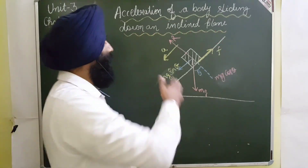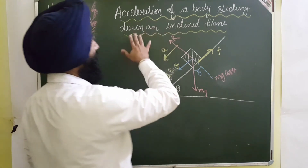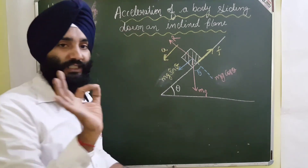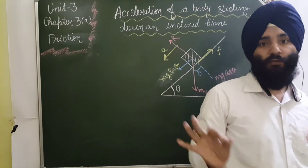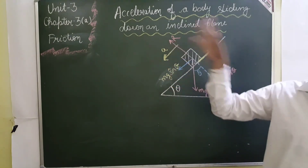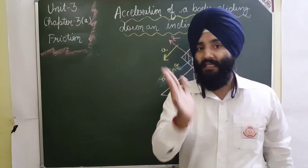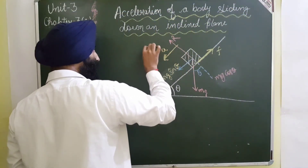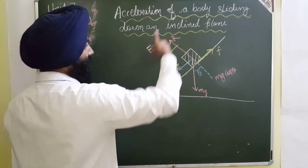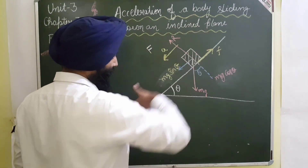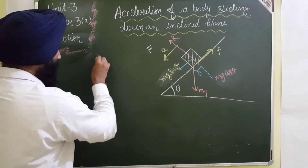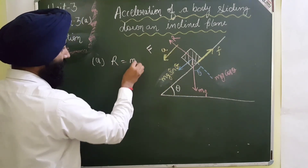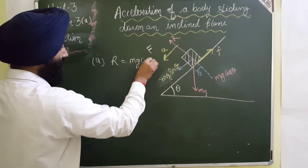After work done, now we have to find the acceleration of the body which is sliding down an inclined plane. Here we have a body sliding down with acceleration. To find the acceleration, we calculate the net force. Suppose capital F is the net force acting in the downward direction — that is why the body is sliding downward. Our first condition: R equals Mg cos θ (equation 1).